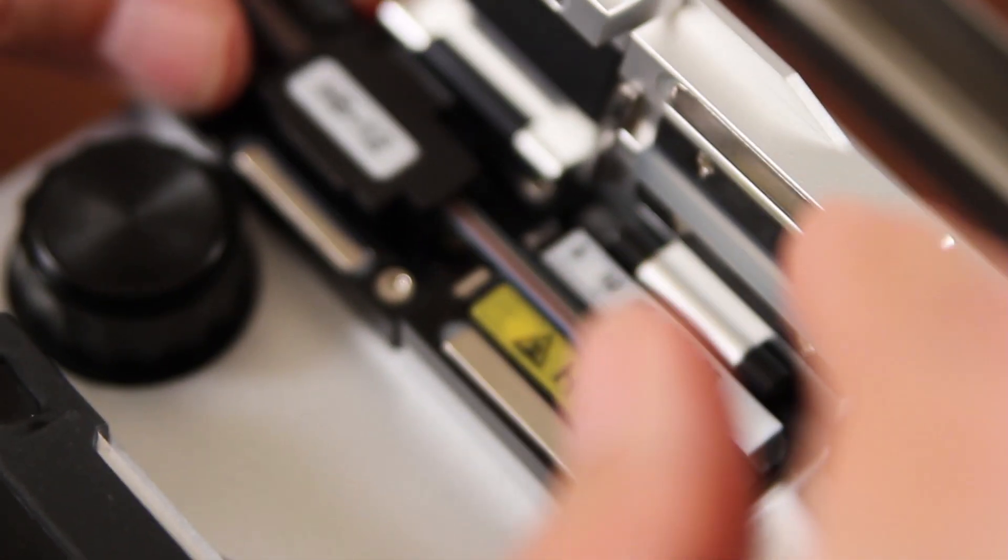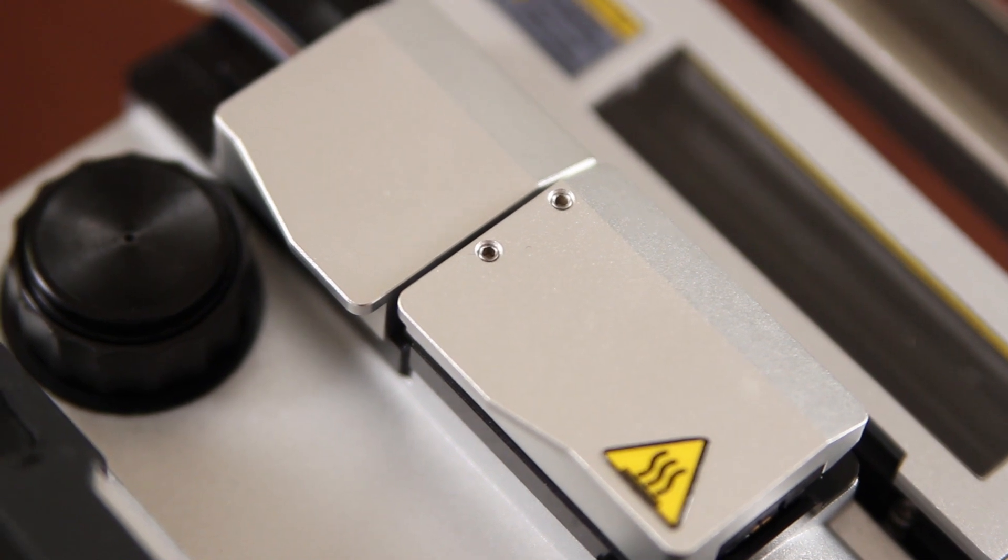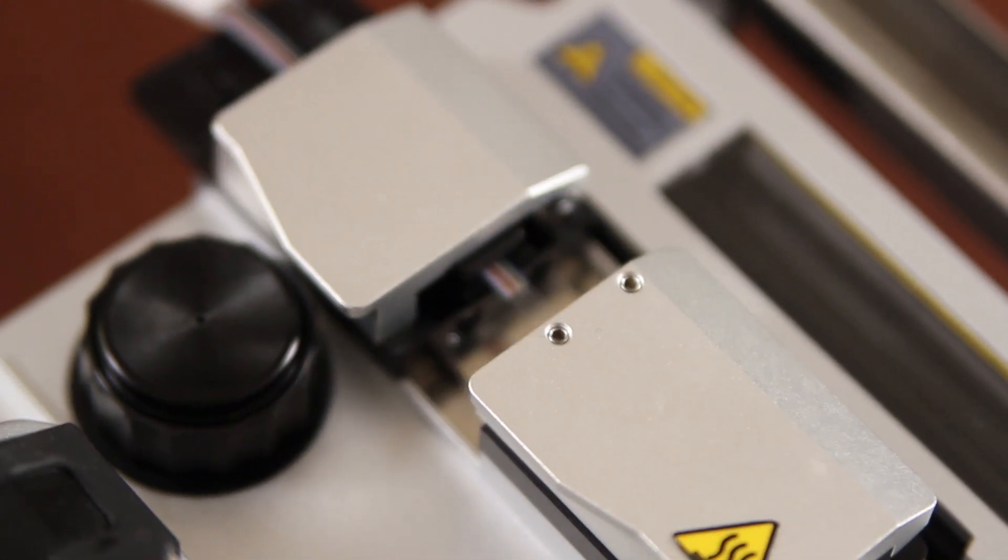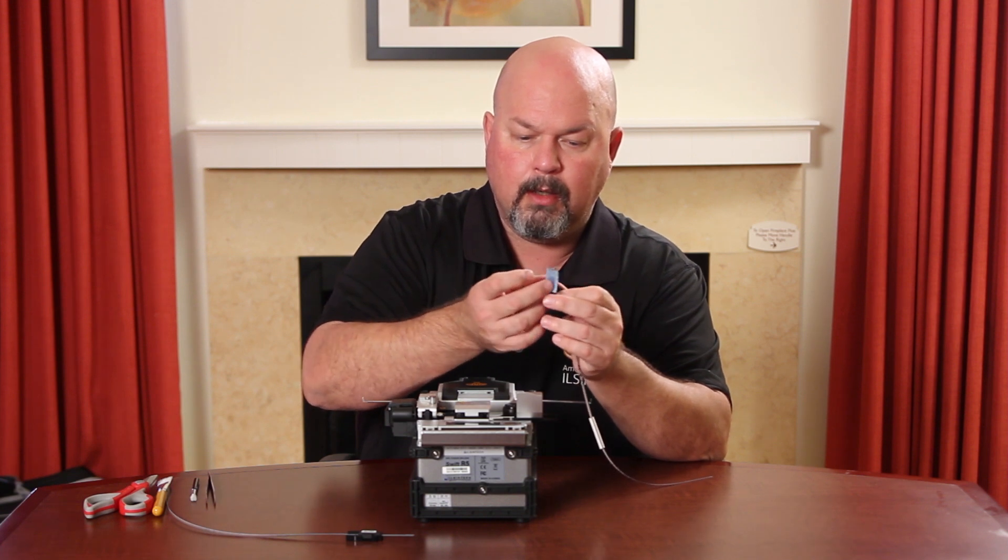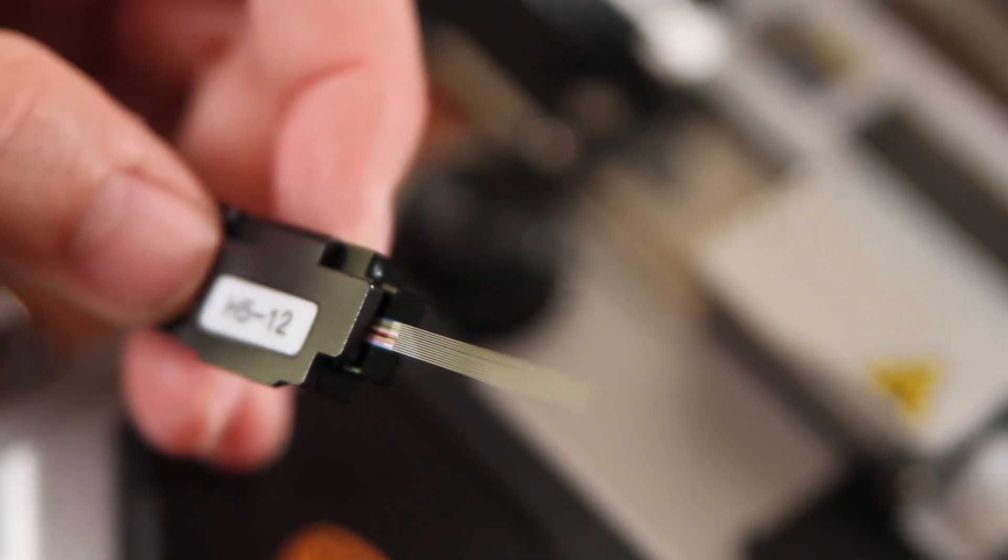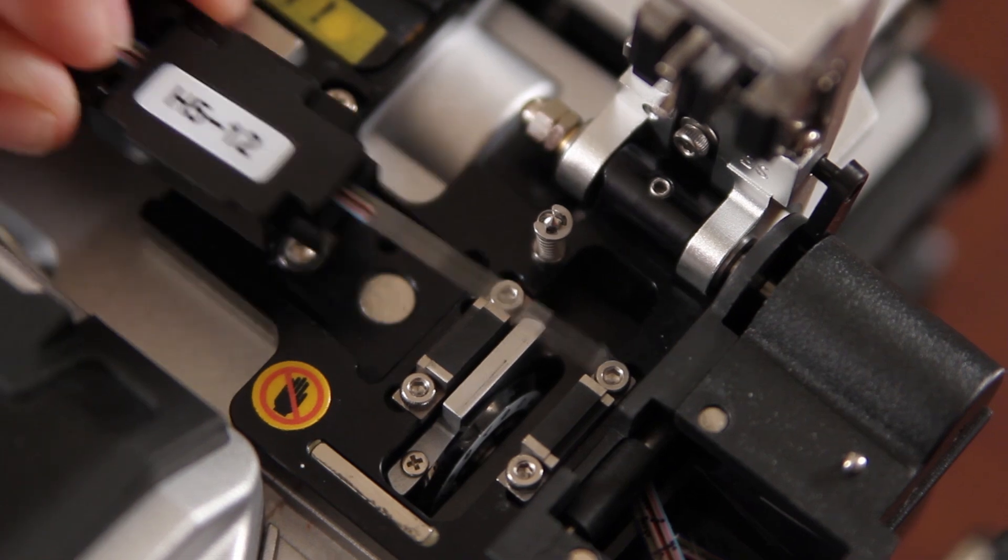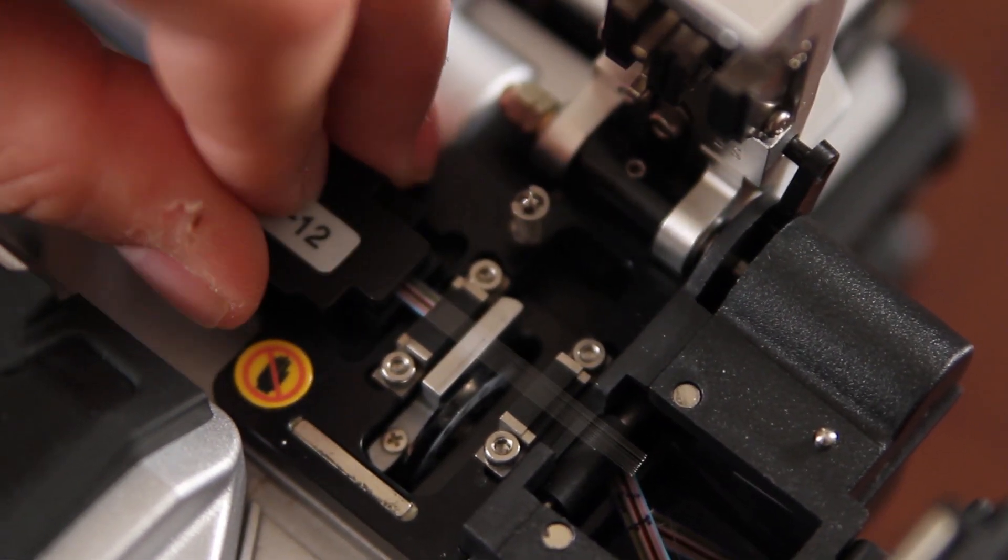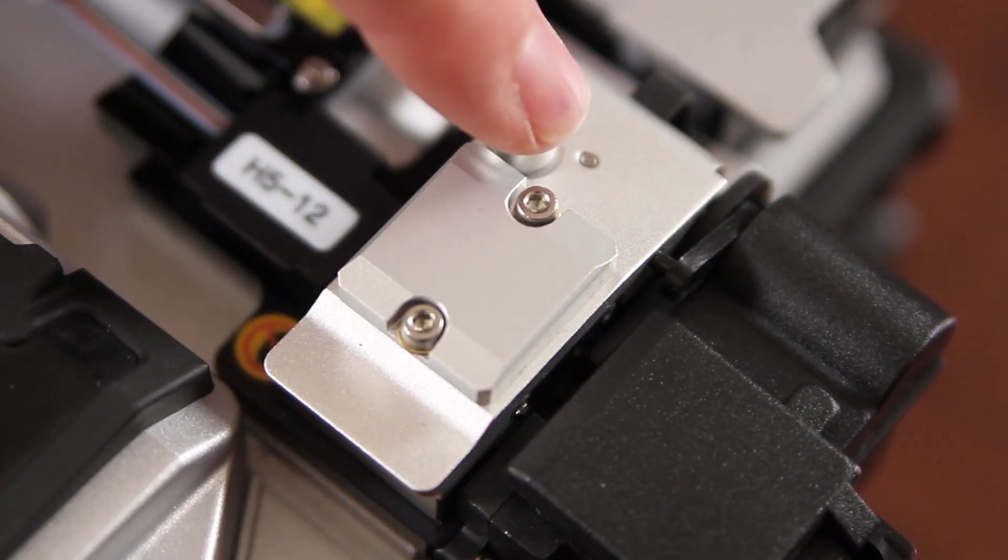Open your automatic thermal stripper. Clean your fibers. Gently brush your fibers to separate. Place inside your cleaver. Press your button.